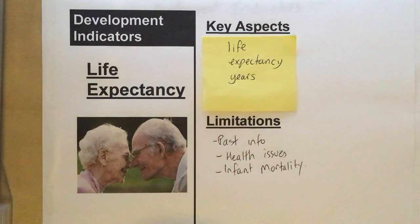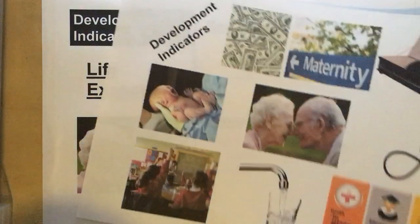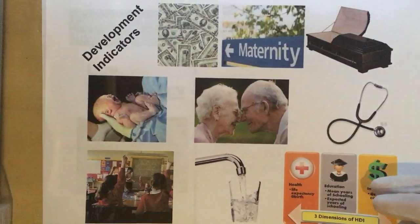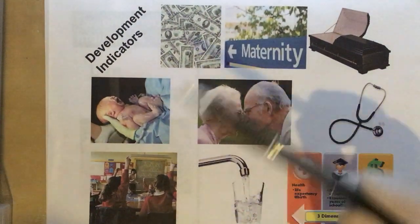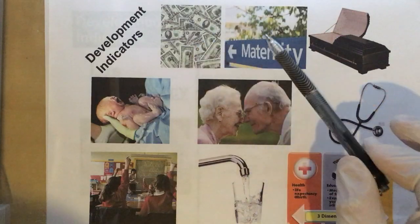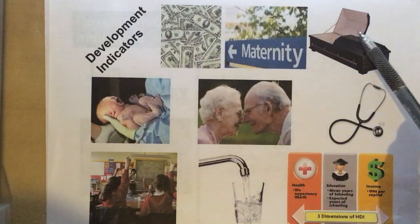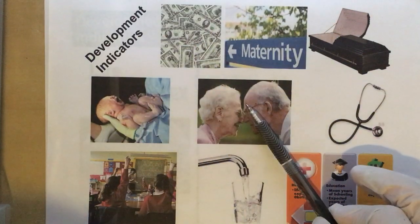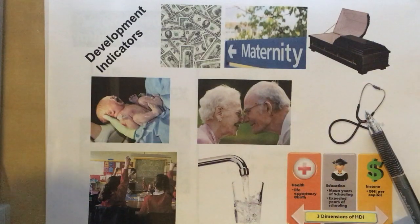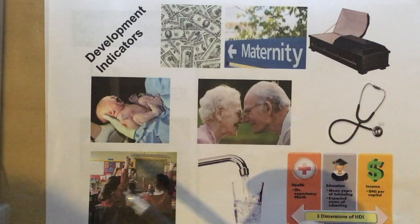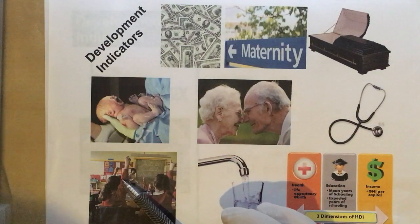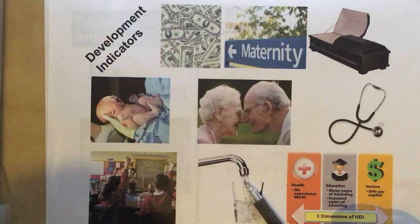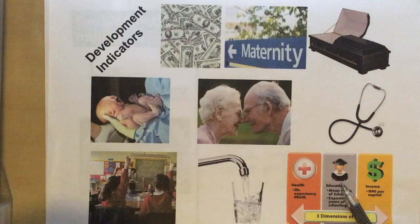Some of the indicators that we've looked at before in a previous episode as an overview are, as shown here: GNI (Gross National Income), Birth Rates, Death Rates, Infant Mortality, Life Expectancy, People Per Doctor, Education Rates, Access to Safe Water, and HDI.